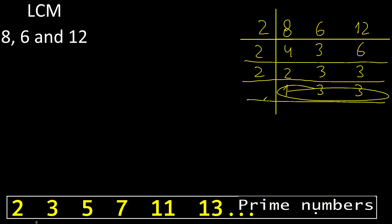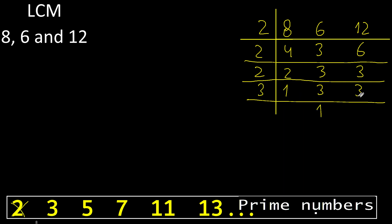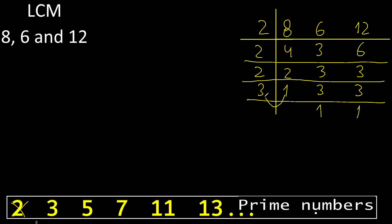Cannot be divided by 2. 3 divided by 3 is 1. 3 divided by 3 is 1. 1 cannot be divided by 3, therefore equal: 1, 1, 1.